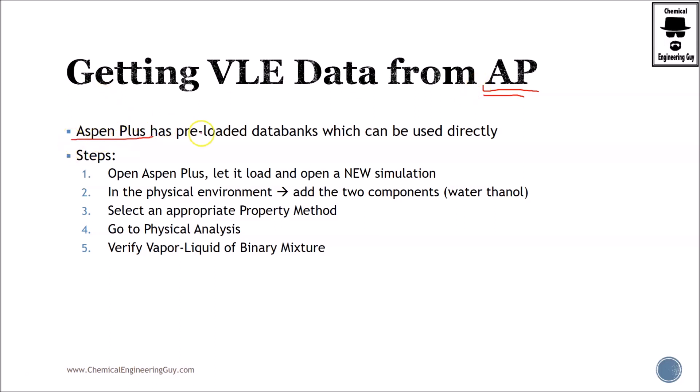Now Aspen Plus has preloaded databanks or databases which can be used directly. So, for example, water and acetone, you may have data for water, you may have data for acetone, but it also has binary interaction data between each other, which makes the models work better.